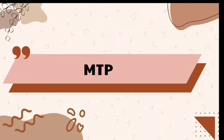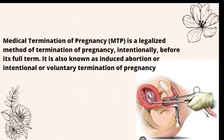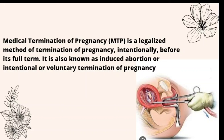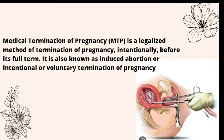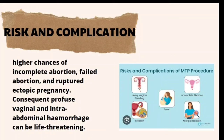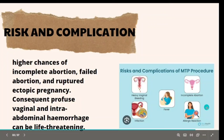Next is MTP — medical termination of pregnancy — a terminal method of female contraception. It is a legalized method under the MTP Act 1971. Conditions for termination include: medical grounds when continuation of pregnancy is hazardous to the mother, or when there is substantial risk to the child if born; and humanitarian grounds such as pregnancy resulting from rape or failure of a contraceptive measure. Risks and complications include heavy vaginal bleeding, fever, incomplete abortion, allergic reactions, and infections.